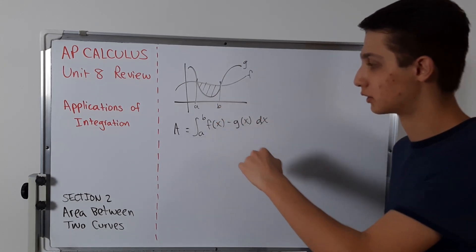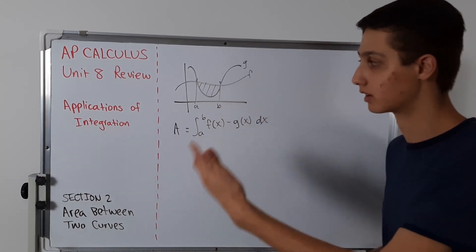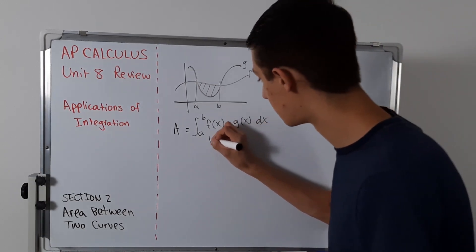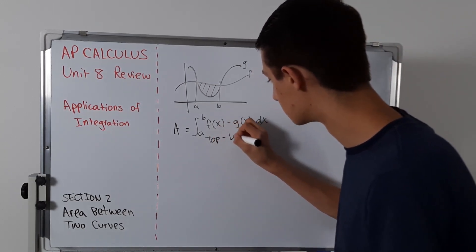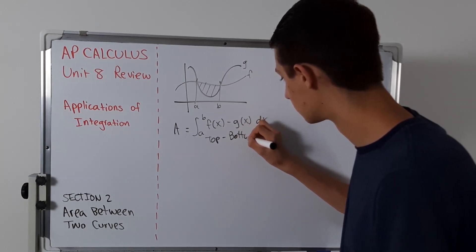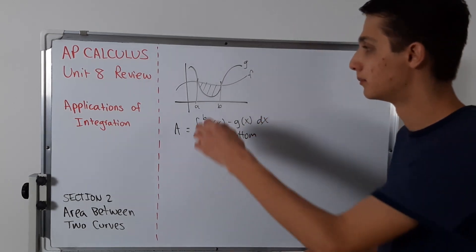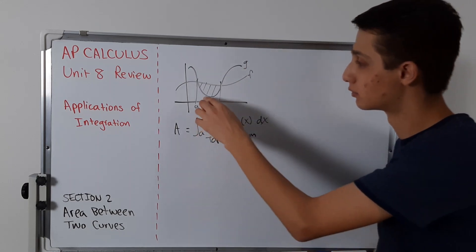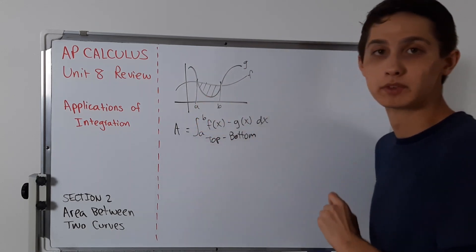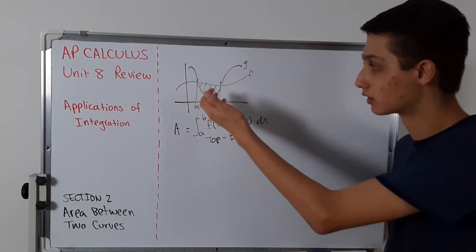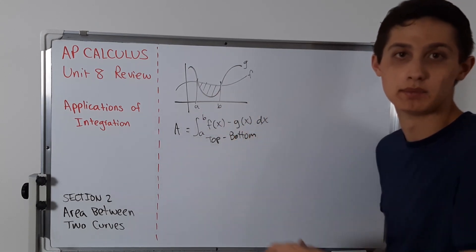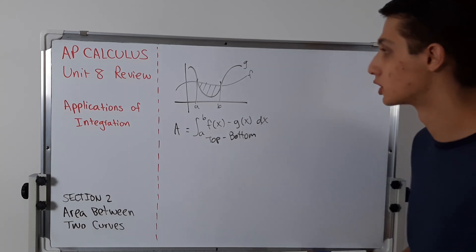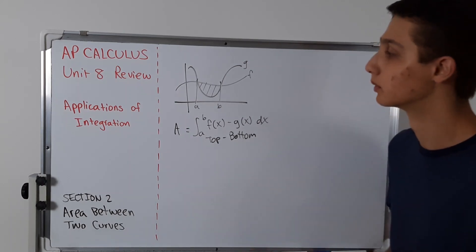It's not always going to be f minus g — it could be g minus f or whatever other functions. Really, you want to do the top function minus the bottom function. That way you're taking the bigger area and subtracting off whatever you don't want. It could also go under the x-axis and become negative, but you treat it the same way. It's always good to draw a picture so you know exactly what you're dealing with.